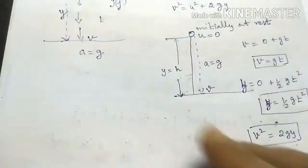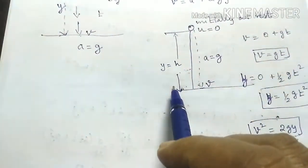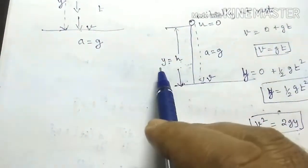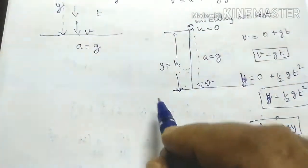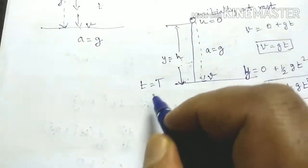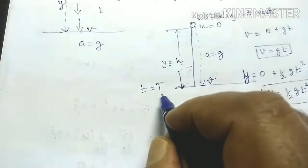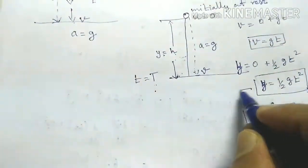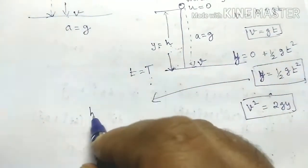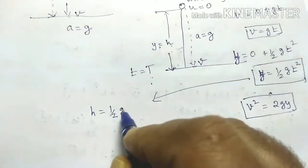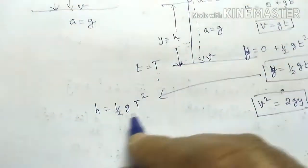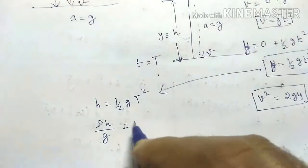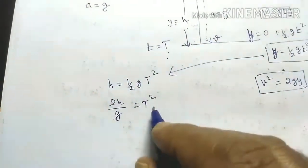Now, the particle is falling from a height h, so we set y equal to h. To fall from this height it takes time t equal to capital T. Taking the second equation: h equal to half g T squared. Rearranging: 2h divided by g equals T squared. Taking the square root on both sides gives T equal to root of 2h over g.